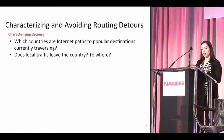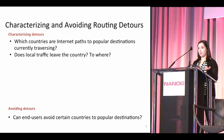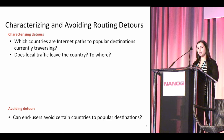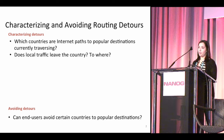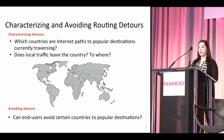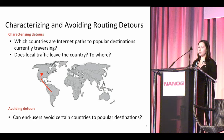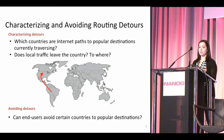The work we did can be divided into two parts. The first part is on characterizing these routing detours, so we can answer questions like: which countries are internet paths to popular destinations currently traversing? We can also ask, does local traffic ever leave the country, and if it does, where is it going? The second part is: can we avoid these routing detours through surveillance states? Can end users avoid certain countries to popular destinations? And there are two primary ways to get country avoidance.